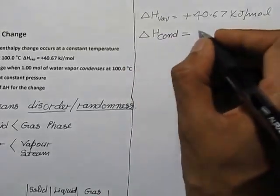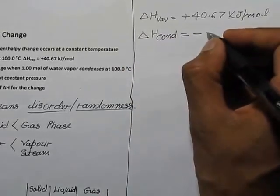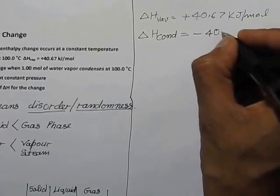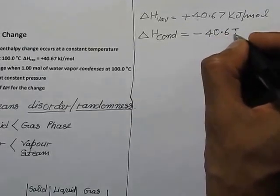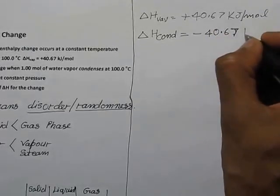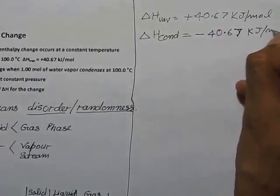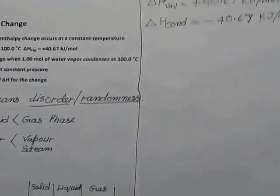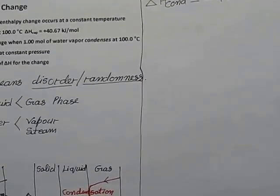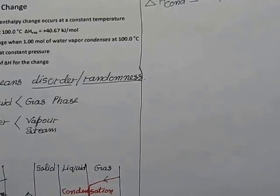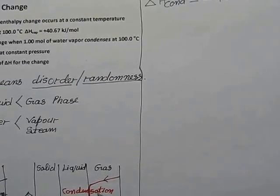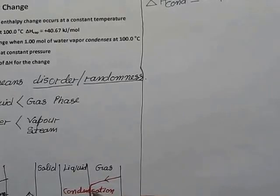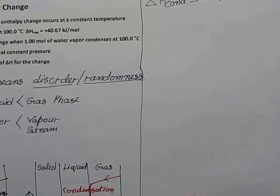So it's -40.67 kJ/mol. If you see, the energy or temperature required to boil the water is exactly the same energy you will get once you do condensation of water gas into water for the same amount of water.